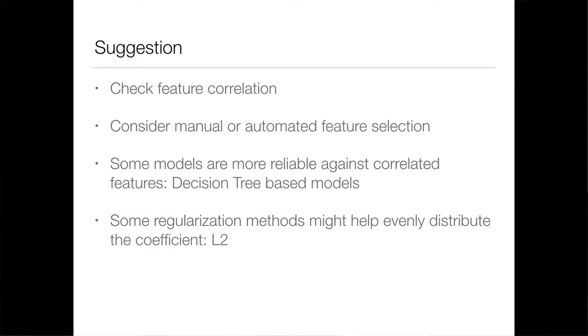It makes things more opaque and less understandable. What do you do? At least check feature correlation, and do feature selection — either manually or in a more automated way. Some models are more resilient to correlated features, particularly tree-based models: once a branch uses some feature, the correlated feature becomes much less relevant. L2 regularization also helps by preferring evenly distributed parameter coefficients.